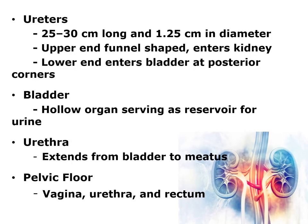Additional parts of the urinary tract: Ureters are 25 to 30 centimeters long and 1.25 centimeters in diameter — the upper end funnel-shaped enters the kidney, while the lower end enters the bladder at the posterior corners. The bladder is a hollow organ serving as a reservoir for urine. The urethra extends from the bladder to the meatus. The pelvic floor includes the vagina, the urethra, and the rectum.